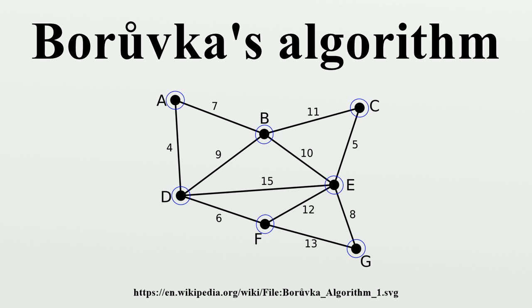The algorithm was rediscovered by Choket in 1938, again by Florek, Lukasiewicz, Perkel, Steinhaus, and Zubzitsky in 1951, and again by Sollin in 1965. Because Sollin was the only computer scientist in this list living in an English-speaking country, this algorithm is frequently called Sollin's algorithm, especially in the parallel computing literature.